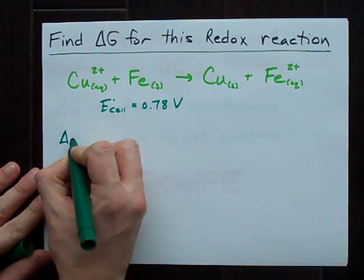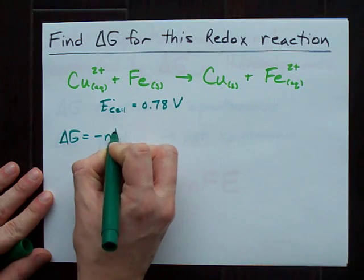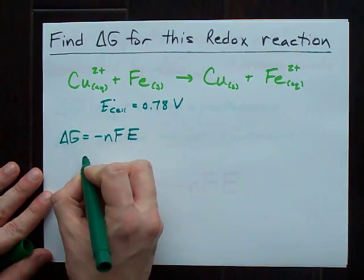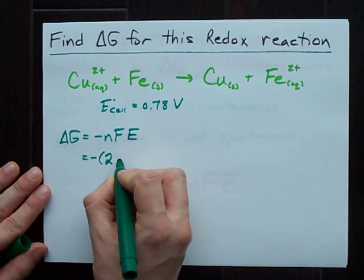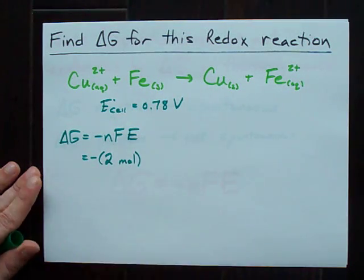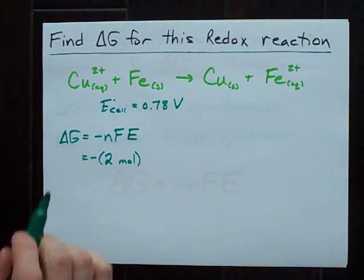Well, delta G equals negative nFE, which is negative. Each time this reaction happens, we swapped two electrons.